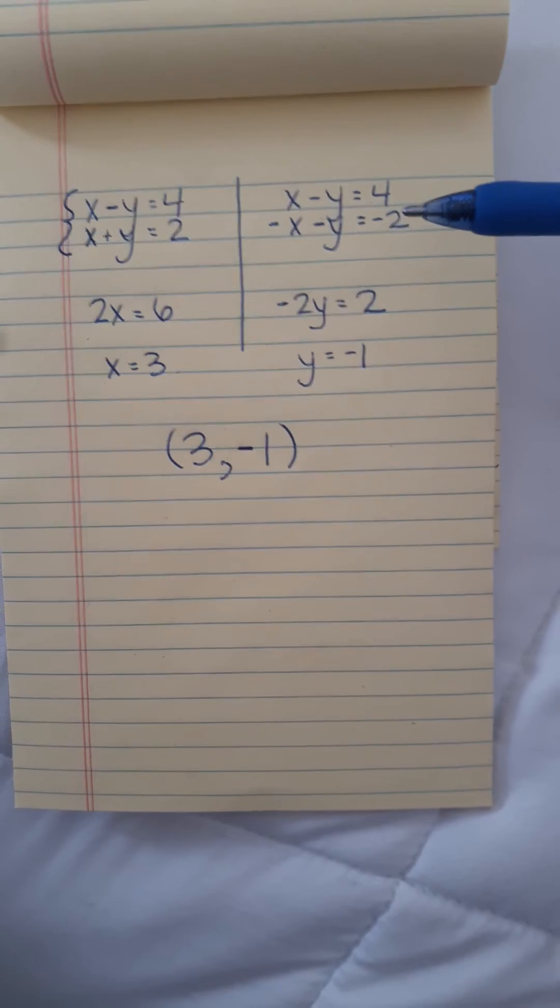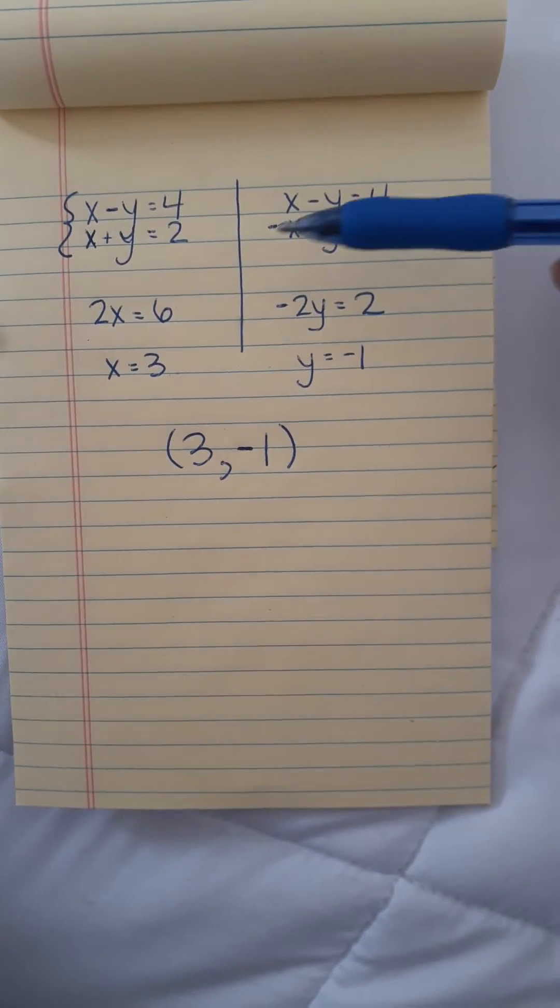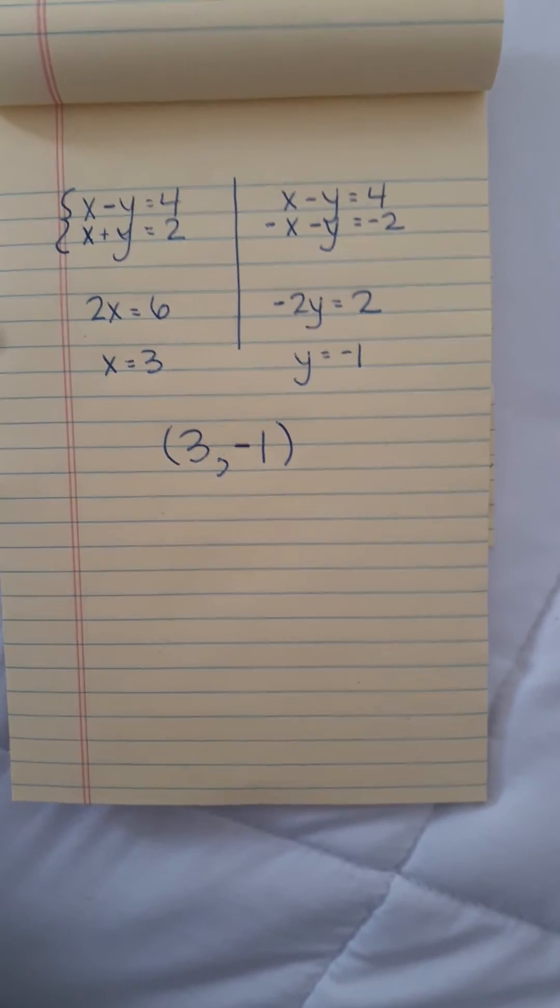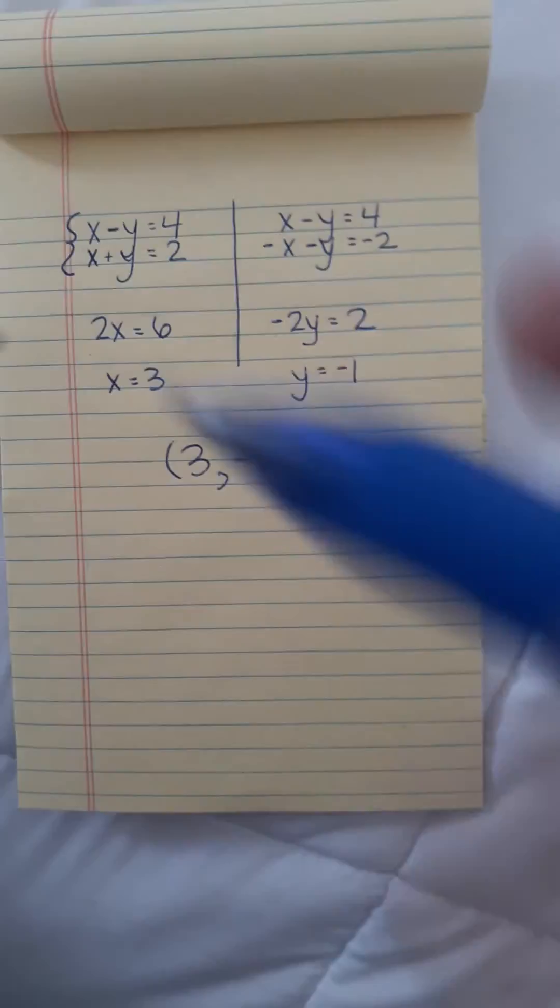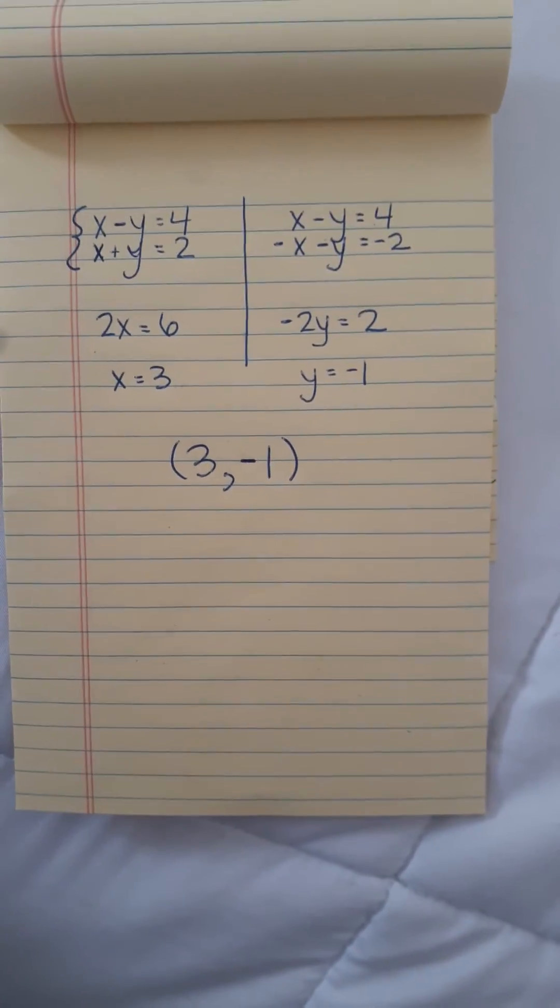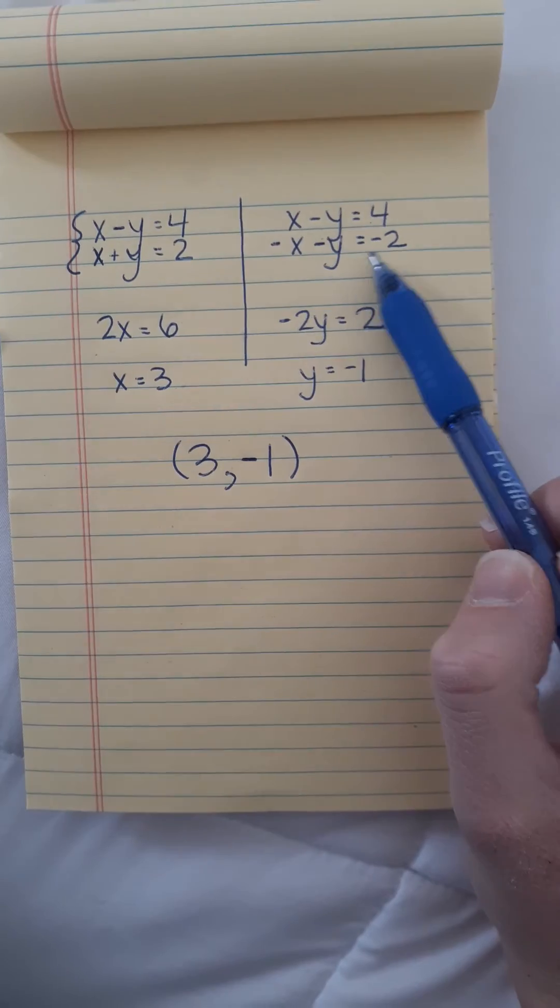This side looks a little different. All I did was multiply the bottom equation by negative 1. I multiplied both sides by negative 1, so my equation is still the same, it just looks different. So I have negative x minus y equals negative 2.